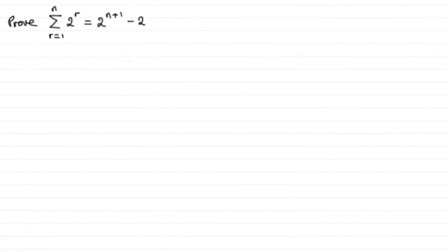Welcome to another tutorial in my series on proof by mathematical induction, where I'm looking at summations of series. In this example, we've got to prove that the sum of 2 to the power r, r going from 1 to n, is equal to 2 to the power n plus 1 minus 2.